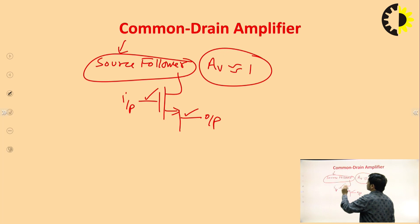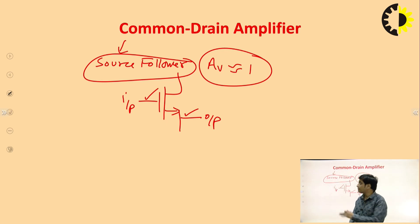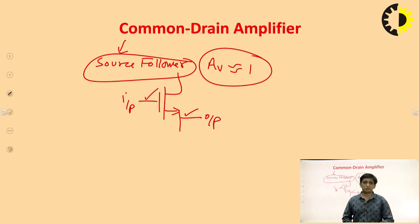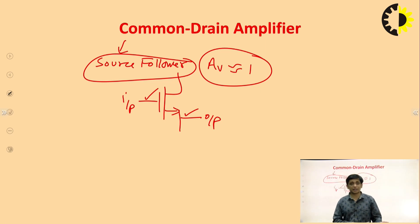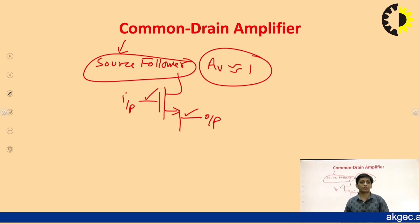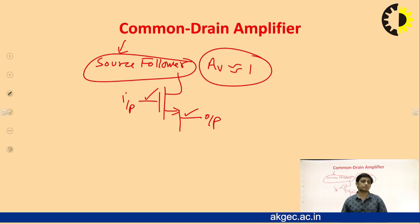Like in BJT where common collector is called emitter follower, in MOSFET common drain is called source follower and the voltage gain is 1. For an audio amplifier, which configuration do we choose? Common gate is not preferred because its input resistance is low — signal loss will be more. As for common drain, the voltage gain is only 1 at maximum, so we cannot use it for amplification either. Therefore, we choose common source amplifier for audio applications.